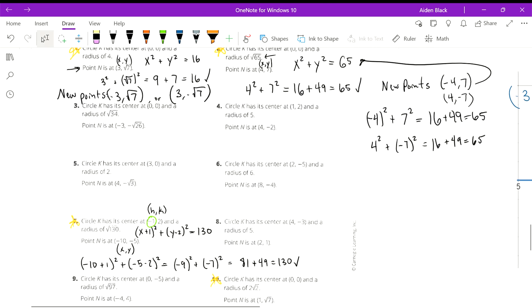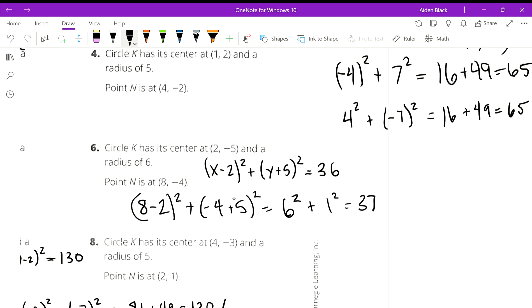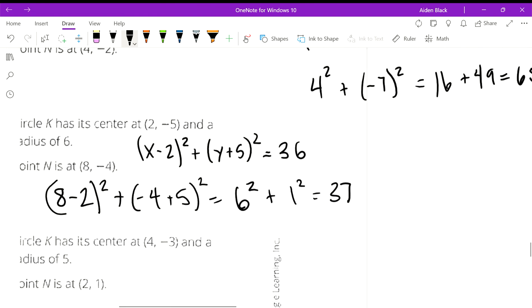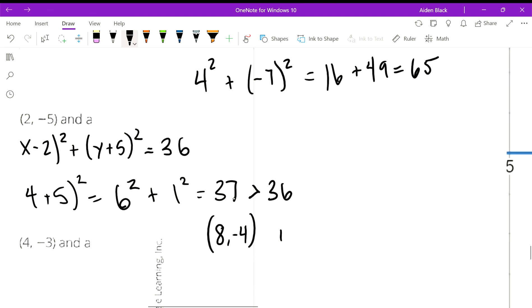Now let's do one of these problems where the point does not lie on the circle. So x minus 2 squared plus y plus 5 squared equals 36. If we plug this point in, we get 8 minus 2 squared plus negative 4 plus 5 squared, which equals 6 squared plus 1 squared, which is 37. You know, since it doesn't lie on the circle, it's not equal to the radius squared, whether it sits on the inside or the outside of that circle? Well, if the number is greater than your radius squared, then it sits on the outside. Point 8 comma negative 4 is on the outside.